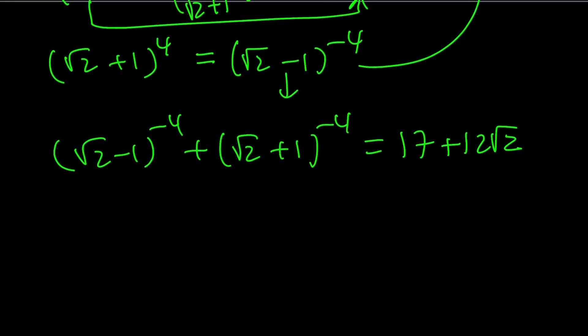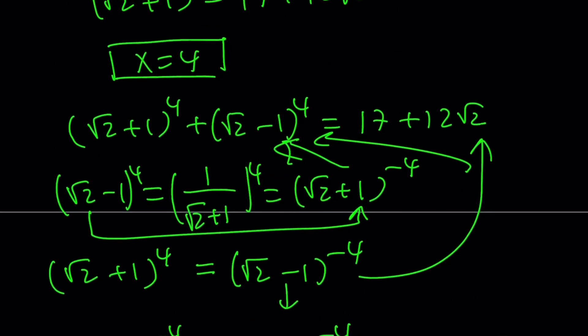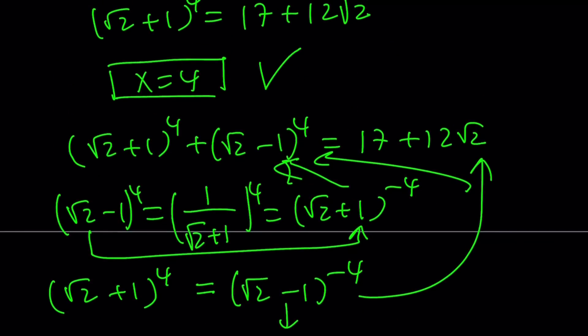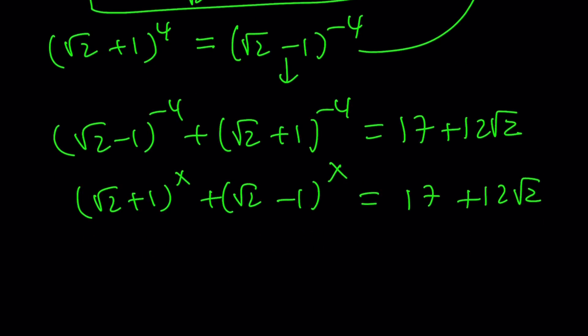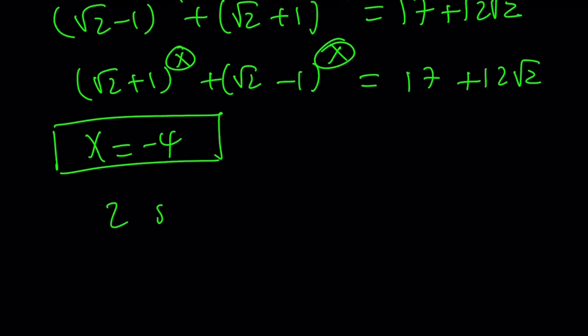This means what? Our equation, remember, was square root of 2 plus 1 to the x and the square root of 2 minus 1 to the power x equals 17 plus 12 root 2. And then the first solution that we found was x equals 4 because it satisfied the equation. But notice that here x equals negative 4 also satisfies this equation. Therefore, x equals negative 4 is just another solution. Make sense? In other words, we have two solutions for this equation. And the solution set is just going to be negative 4 and 4 together.